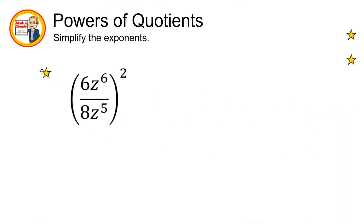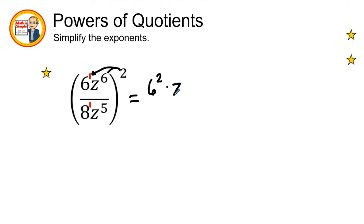Our next example is the quantity of 6z to the sixth power over 8z to the fifth power, all raised to the second power. I'm going to use the distributive property again — remember that the coefficient is going to have an exponent of 1. We distribute to both the coefficient and the variable: 6 raised to the first, times 2 is 2, so 6 to the second power. 6 times 2 gives us z to the 12th power in the numerator.